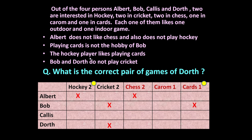Now the remaining part of the table has to be completed using logic. Cricket is played by two players. Since Bob doesn't play cricket and Dorth doesn't play cricket, those two players must be Albert and Kallis. For hockey, since there are four persons and two play cricket, the other two — Bob and Dorth — must be playing hockey.